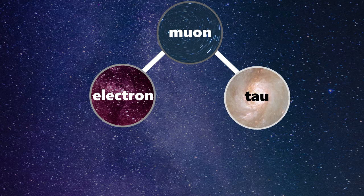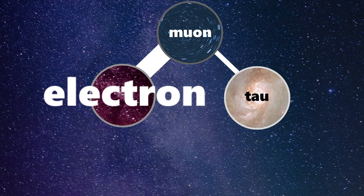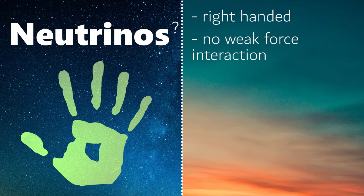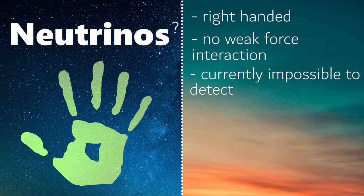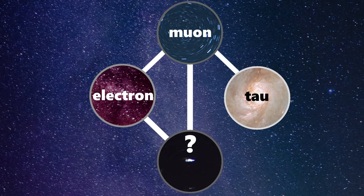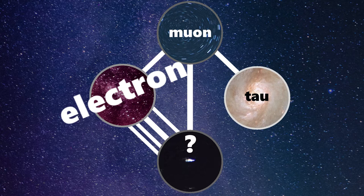At MiniBooNE, scientists sent a beam of pure muon neutrinos at a detector and compared the amounts of the different types of neutrinos. They found that the muon neutrinos that oscillated into electron neutrinos significantly exceeded what their theories were expecting. What could explain this? What if there was a neutrino that was right-handed — a neutrino that couldn't interact with the weak force? The scientists at MiniBooNE wouldn't be able to detect them, but what if the beam neutrinos can switch to this new hypothetical neutrino, and then into the electron neutrino? Depending on the properties of this particle, this oscillation would be easier for the neutrinos, explaining the excess in electron neutrinos. These hypothetical particles are our so-called sterile neutrinos.